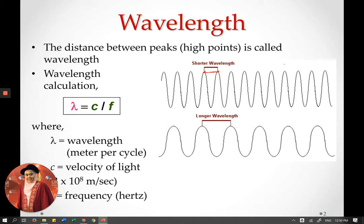To find the wavelength, we use an equation where we use the symbol lambda to represent wavelength, and we use the frequency of the signal along with a constant from the velocity of light. That velocity of light has a value of 3 × 10⁸ meters per second. This value is fixed and allows us to determine the wavelength when we have a certain frequency.